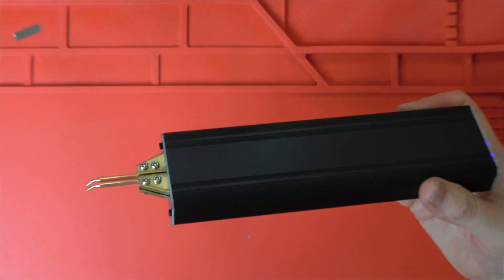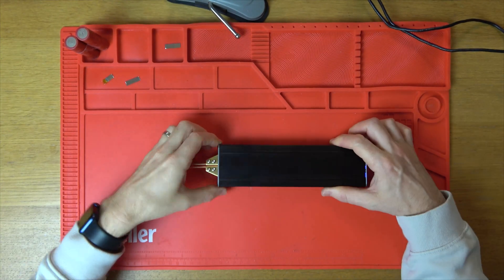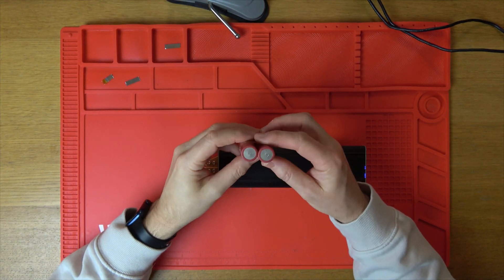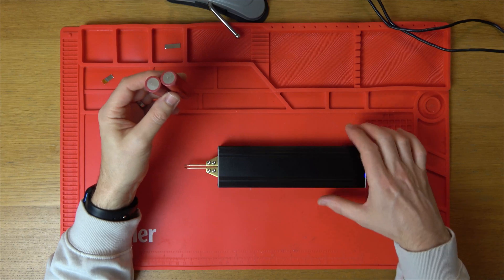Now the idea mainly of these is to do spot welds when it comes to welding up these 18650 cells here. So I'm going to do a quick example. It's really good how it works.